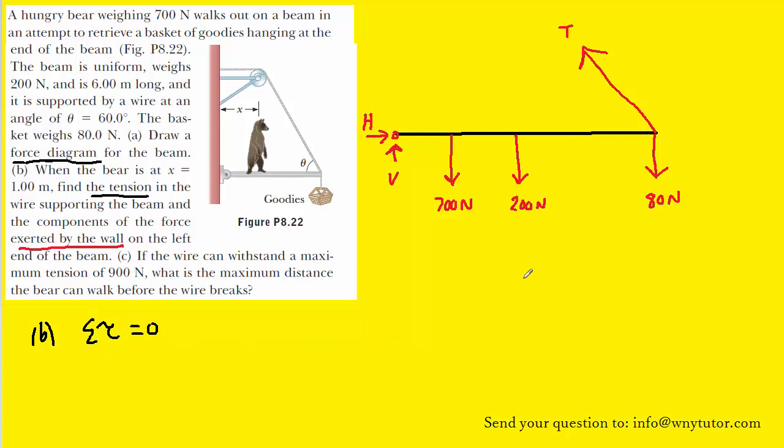Now, the formula for torque is equal to a force times a distance times the sine of an angle. And to get a better understanding of what's going on here, we're going to have to choose what we call a pivot point.